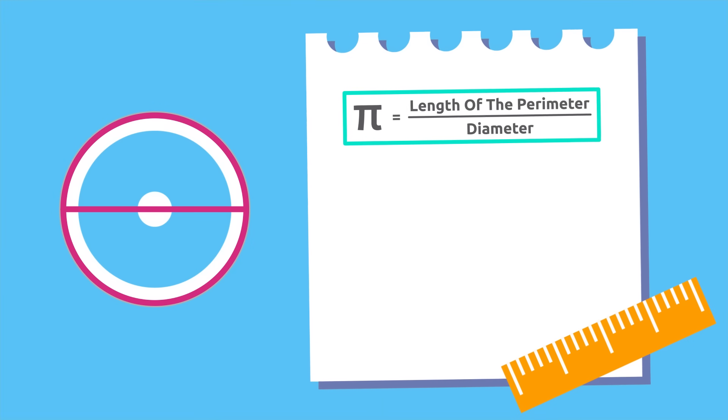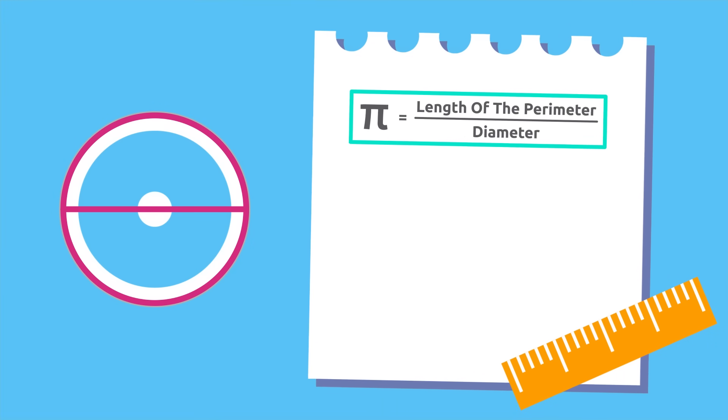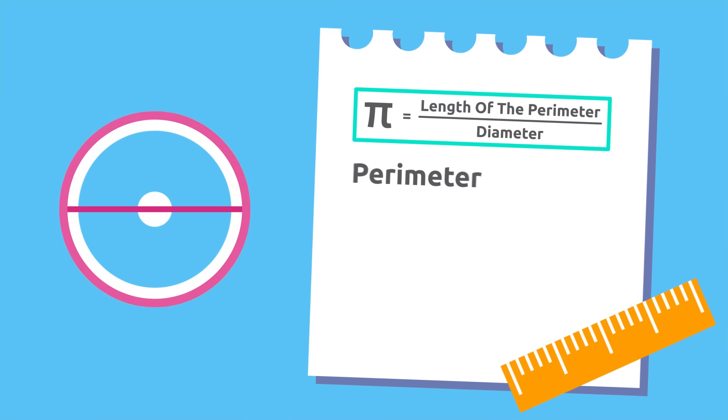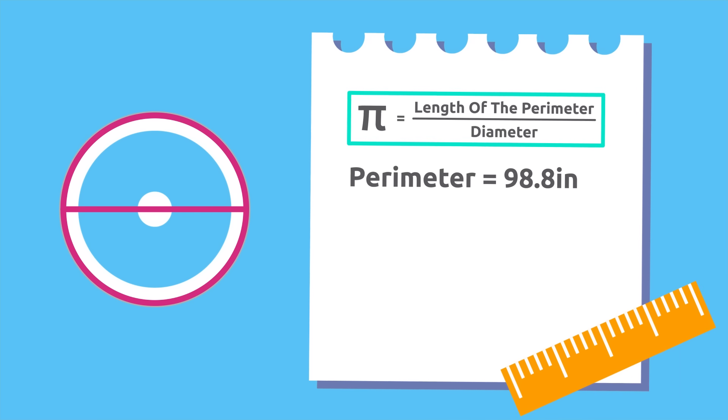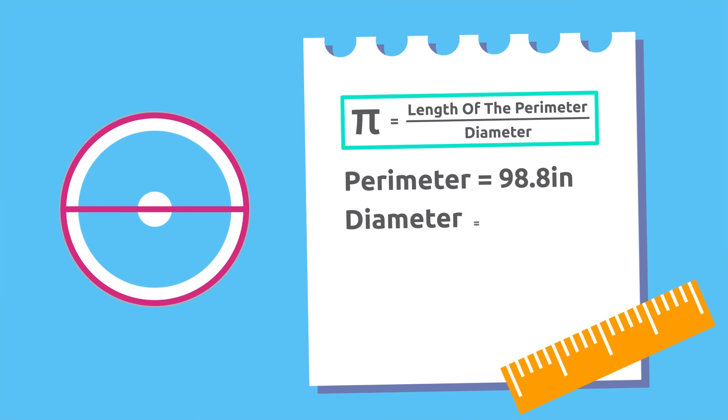Let's see. The perimeter of this wheel is 98.8 inches and its diameter is 31.4 inches. If we divide 98.8 by 31.4, we'll get 3.14.